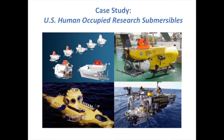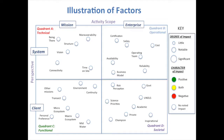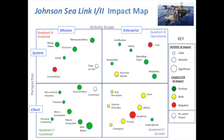I tested the model using human-occupied research submersibles as my test topic. There are four operations that have been working in the U.S. since the mid-1980s. The first task was to identify different factors within each quadrant and come up with a way to illustrate those. In this chart, the size of the circle illustrates the importance of a factor, and the color tells you whether it's a positive or negative impact.